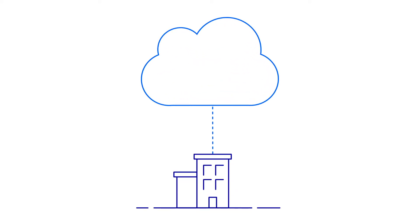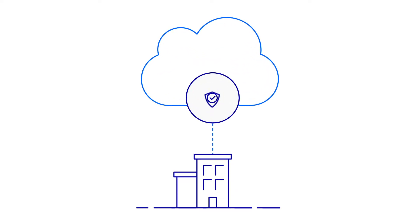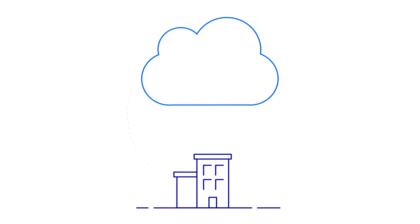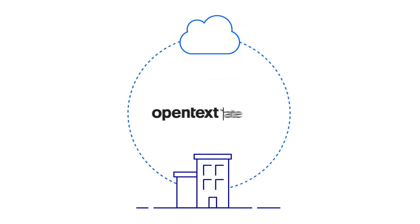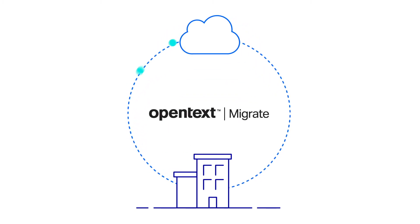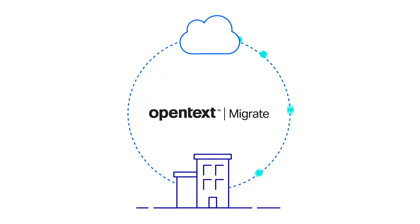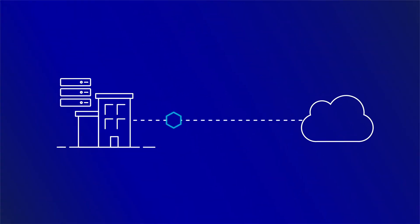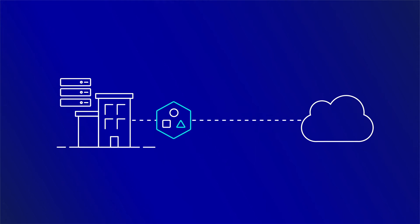Get to the cloud with minimal risk and near-zero downtime. Use OpenText Migrate for safe data migration while maintaining business continuity. During migration, any changes from the source are automatically replicated to the target.